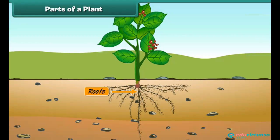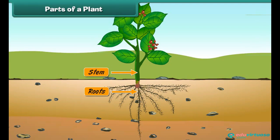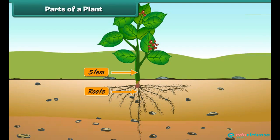Roots of a plant are located under the ground. They help plants absorb water and nutrients from the soil. The stem is the main body of a plant. It grows above the ground and transports water and nutrients from the roots to the other parts of the plant.